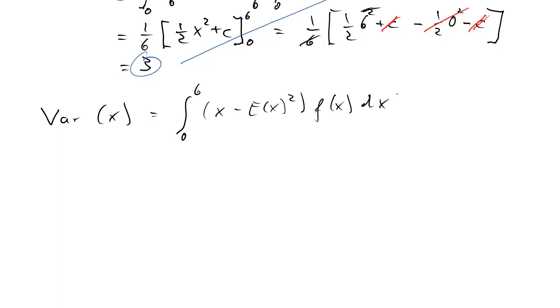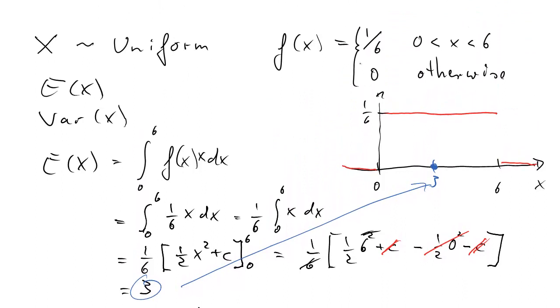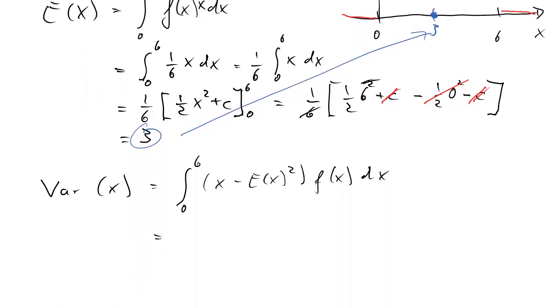That looks more complicated. Let's make this digestible. This density is 1/6 again; we are still working with the same uniform distribution. So this will end up in front of the integral. What we now have is 1/6 times the integral from 0 to 6 of (x minus expected value) squared dx. We already know that the expected value is equal to 3, so we have (x minus 3) squared dx.